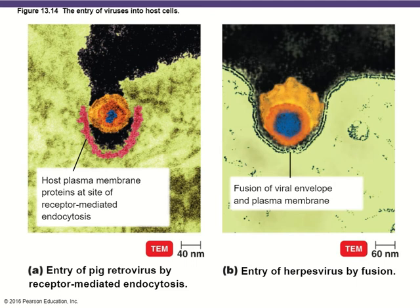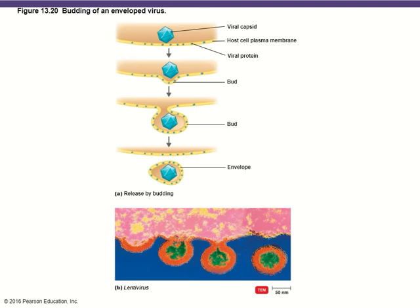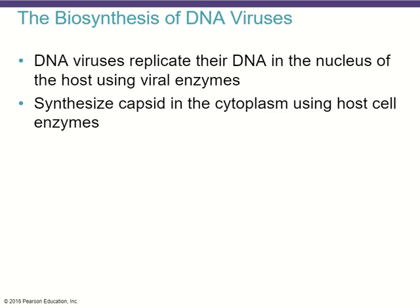This is an example of a budding or enveloped virus that takes a portion of the plasma membrane with it as a protective coat as it goes on to infect another cell. For the biosynthesis of DNA viruses, DNA viruses will replicate their DNA in the nucleus of the host using viral enzymes that the virus encodes for, while synthesis of the capsid in the cytoplasm occurs using the host's own enzymes.